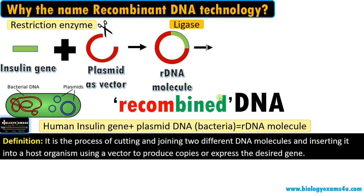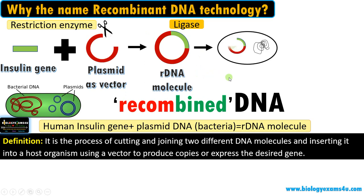The next step is transferring this recombinant DNA molecule into a host organism. The most common host is bacterium E. coli. The process is called transformation, and there are different gene transfer methods.